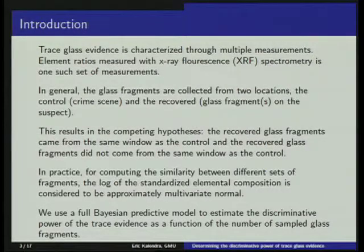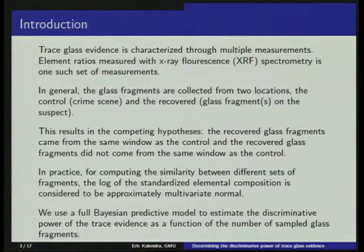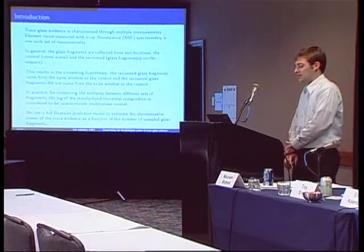Basically I'm using XRF, which has been explained many times and probably everyone in the room knows better than I do. Now, important for statistics, we have to define a couple of things for the null and alternative hypotheses. I'm going to be using the idea that there are two locations that glass is recovered from: primarily one from the crime scene, which we call the control, and one from the suspect, which is the recovered fragments.